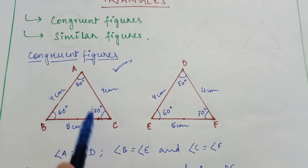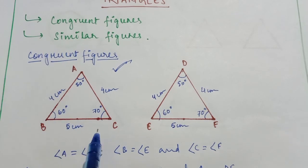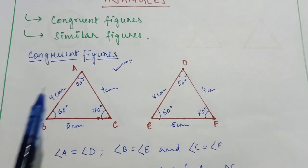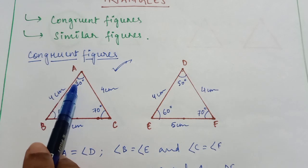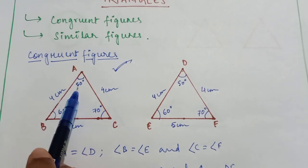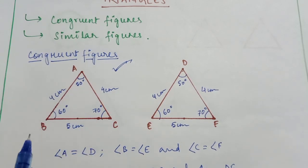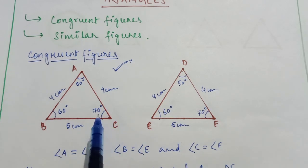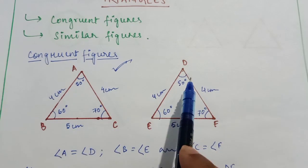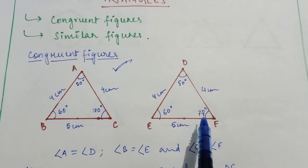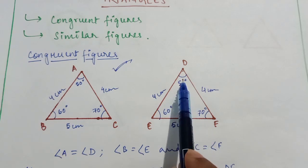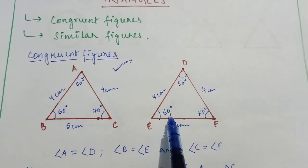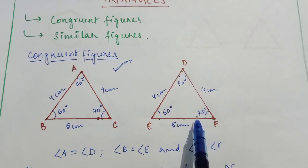Suppose I have triangle ABC and triangle DEF. For triangle ABC: angle A is equal to 50 degrees, angle B is equal to 60 degrees, angle C is equal to 70 degrees. Similarly for triangle DEF: angle D is equal to 50 degrees, angle E is equal to 60 degrees, and angle F is equal to 70 degrees.